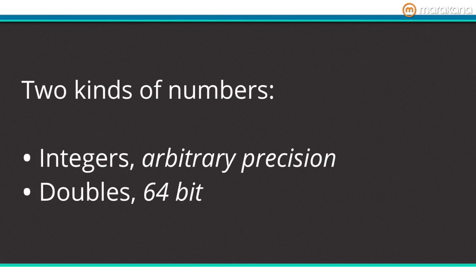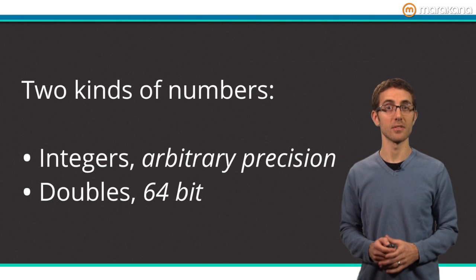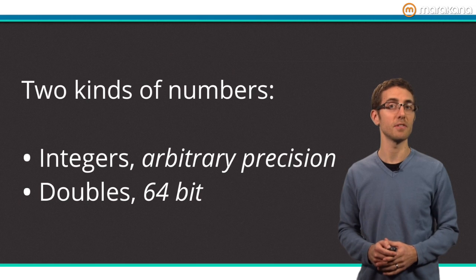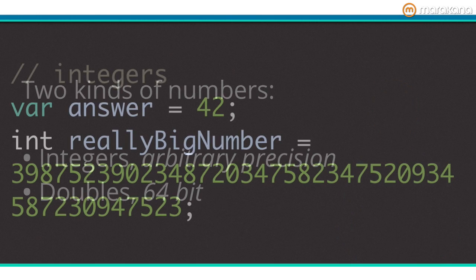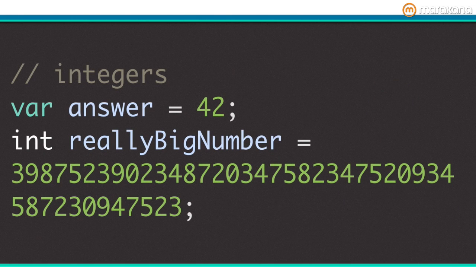Dart has two types of numbers. Integers are arbitrary precision, which means they can grow to arbitrary size in the Dart VM. Doubles are 64-bit floating-point numbers that conform to the IEEE 754 standard. You can create instances of these classes using literals.